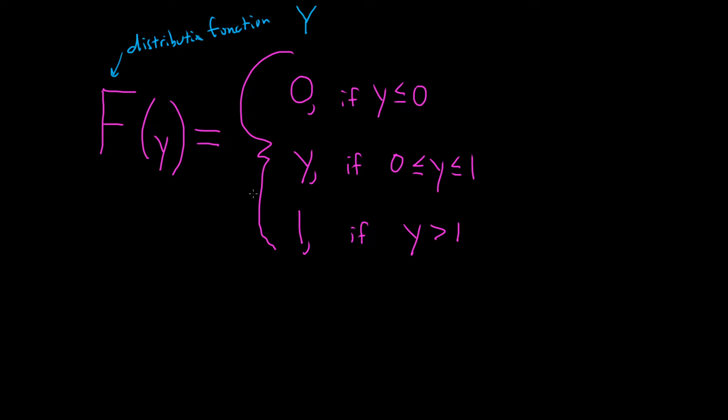To do that all we have to do is basically take the derivative of each piece and then think a little bit about what's happening at the endpoints. So little f of y, that's going to be our probability density function. Let's go ahead and take the derivatives first. The derivative of 0 is just 0, the derivative of y is just 1, and the derivative of 1 is simply 0.